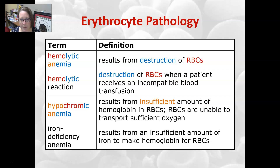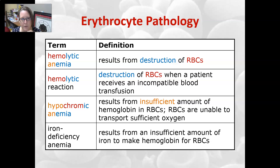Hypochromic anemia is an anemia that results from an insufficient amount of hemoglobin in red cells, so the red cells are unable to transport enough oxygen. Because hemoglobin gives red cells their color, if there is not enough hemoglobin the cells look pale — hypo meaning low, chromic meaning color.